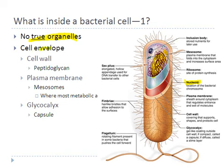All bacteria have a cell envelope — a cell wall that covers the entire interior components. It protects the bacteria from chemicals or enzymes that can break it apart, and it also holds the shape of the bacterium. The coccus, bacillus, and spirillum shapes are all maintained by the cell wall. The cell wall of bacteria contains a carbohydrate unique to the bacterial kingdom called peptidoglycan, which is a polysaccharide present in the cell wall.